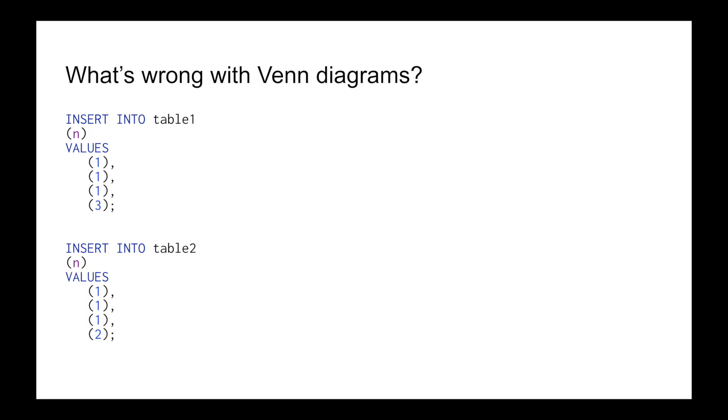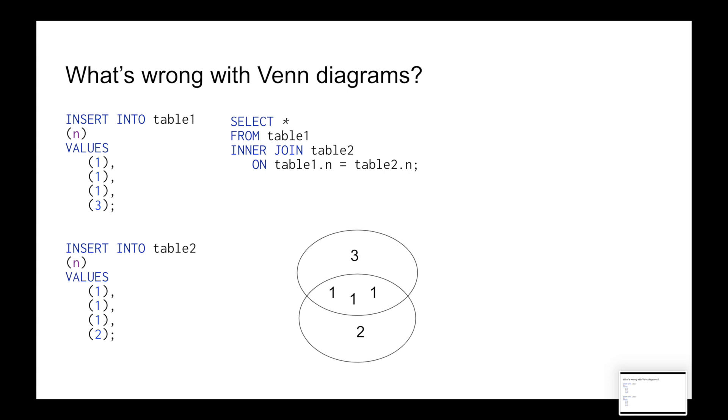Let's take a look at an example right away. Let's say we have two tables with duplicate values: 1, 1, 1, 3 and 1, 1, 1, 2. If we represent an inner join as an intersection of circles,